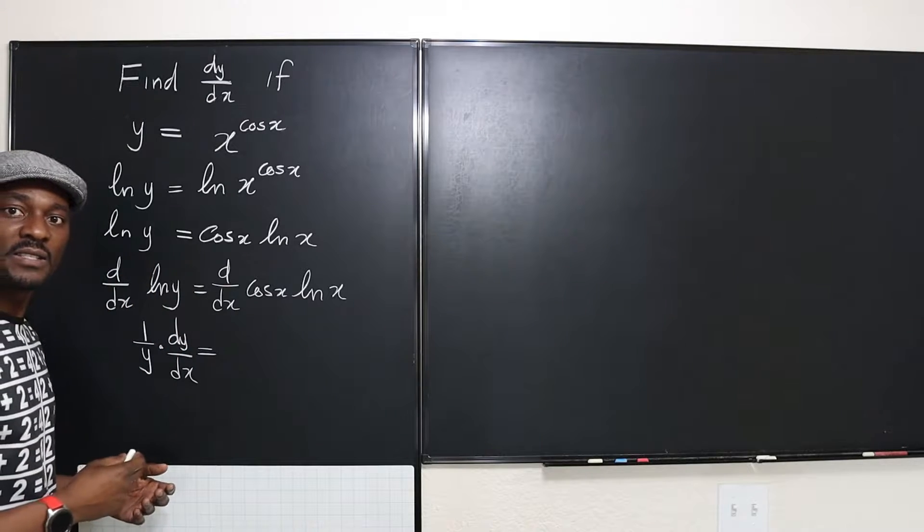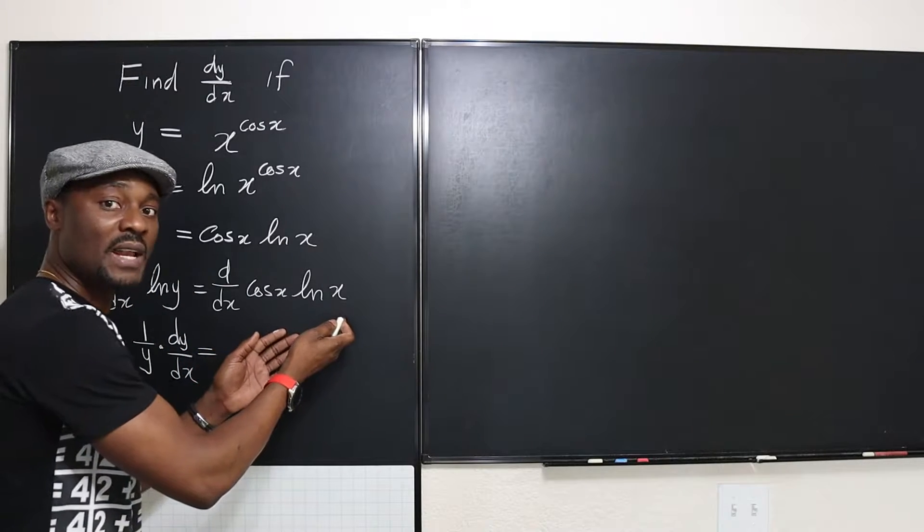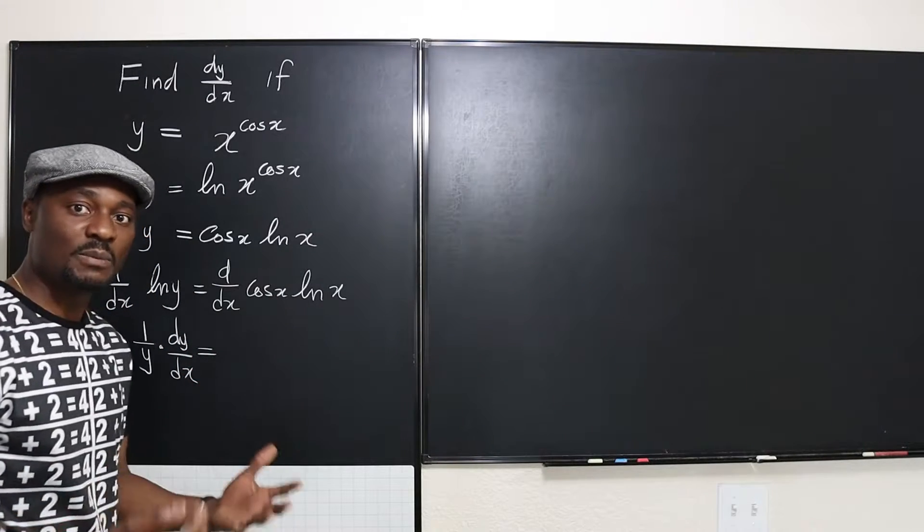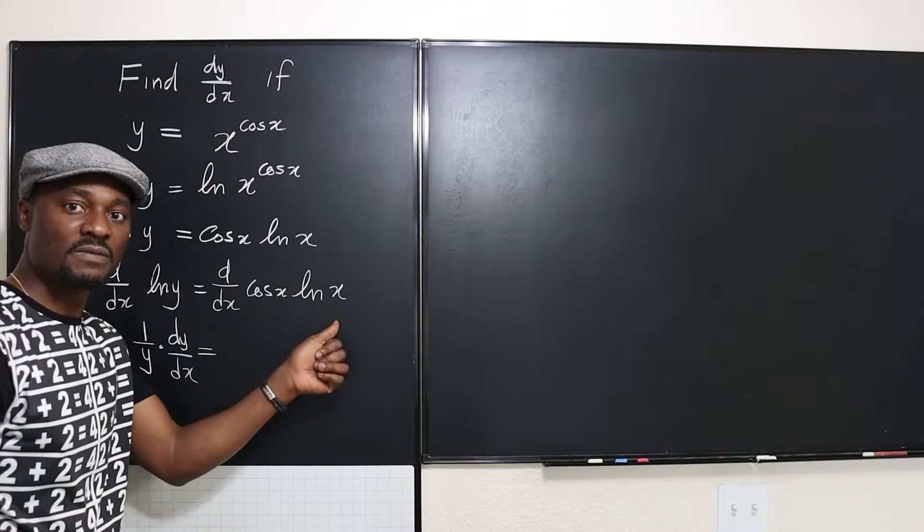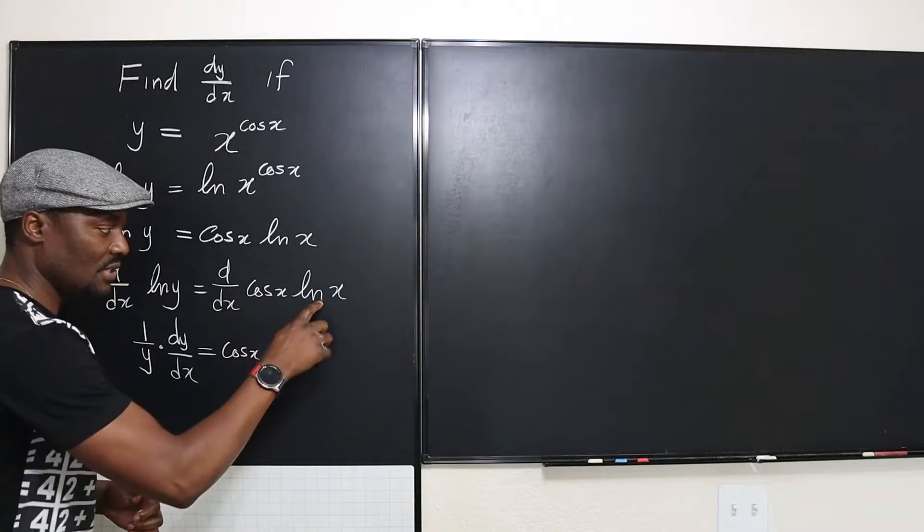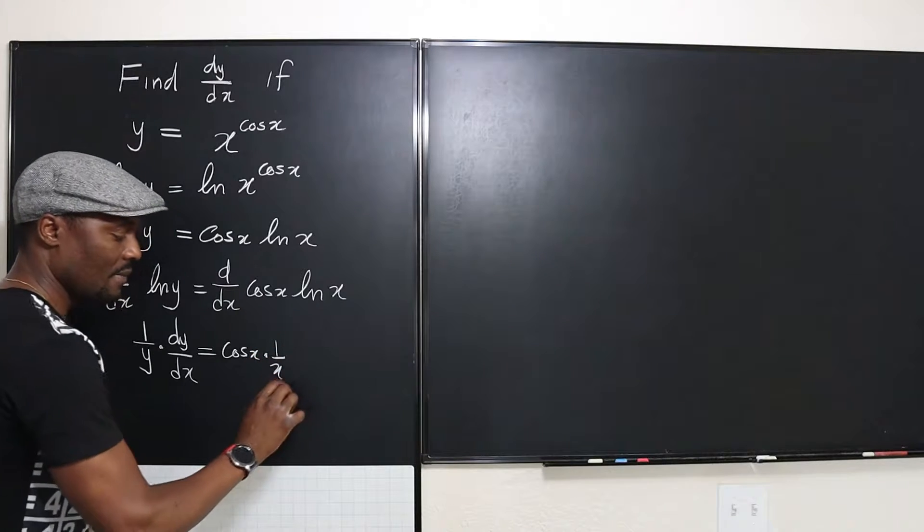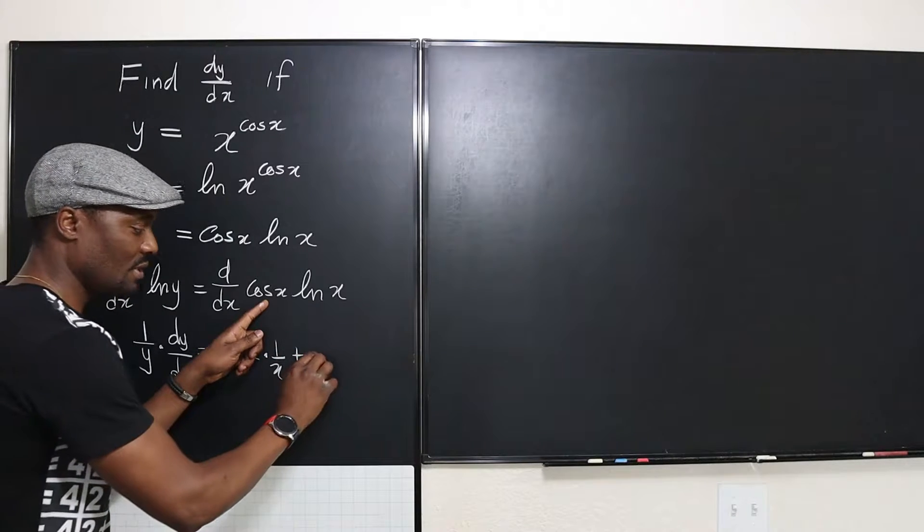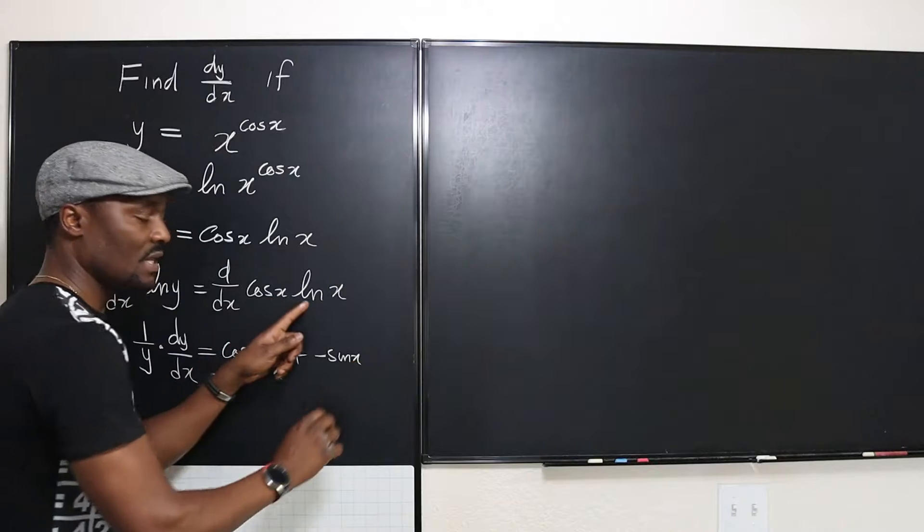That's the result of this derivative. So we do the same thing on the right-hand side, but we apply the product rule, and the product rule says keep the first, differentiate the second. Plus, differentiate the first, keep the second.